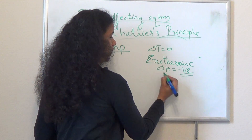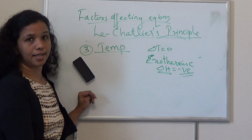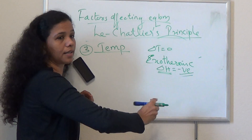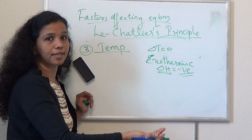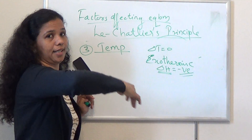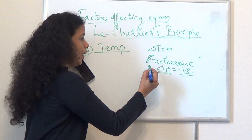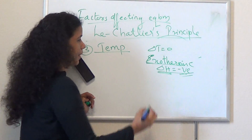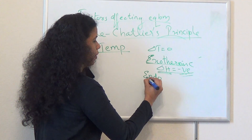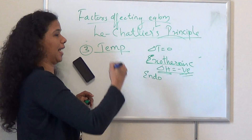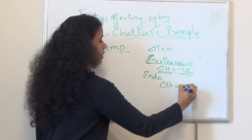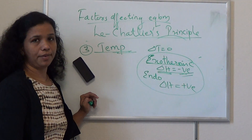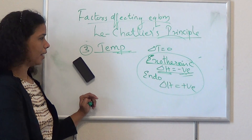The enthalpy change, which we already learned in thermodynamics, will be negative for exothermic reactions. In an exothermic reaction, energy is released — 'exo' means something is coming outside — so delta H is negative. In an endothermic reaction, 'endo' means taking inside, so delta H is positive. In these two cases, temperature has an effect if the system is at equilibrium.